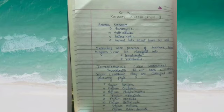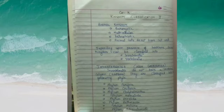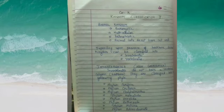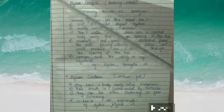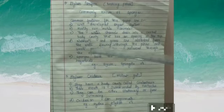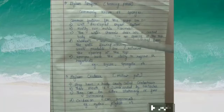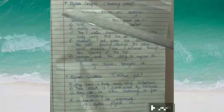Invertebrates are classified into the following phyla: Phylum Porifera, Phylum Cnidaria, Phylum Platyhelminthes, Phylum Nematoda, Phylum Annelida, Phylum Arthropoda, Phylum Mollusca, and Phylum Echinodermata. One by one we will discuss their characteristic features and examples.